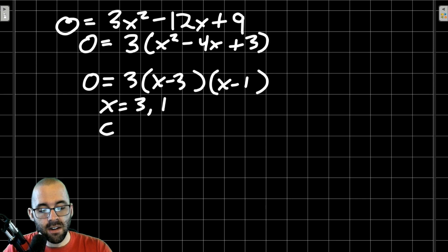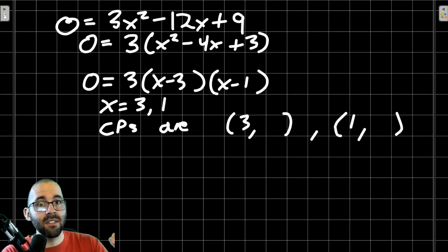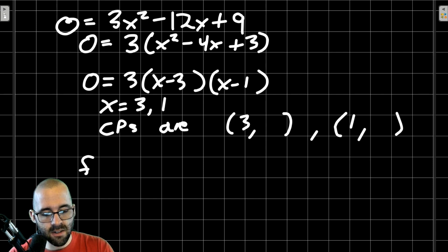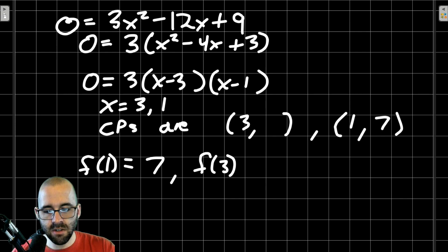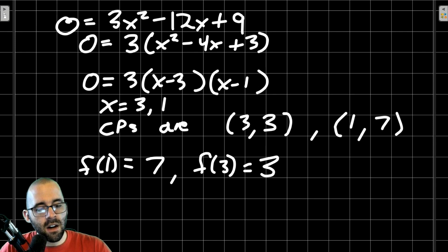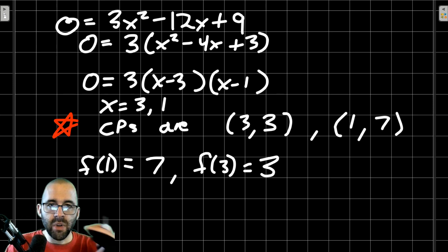Critical points are when x equals 3 and x equals 1, but remember, critical points are points. We need the y-coordinates. We plug into the original function to get those y-coordinates. Plugging in 1 into the original function gives us 7, and plugging in 3 gives us positive 3. So these are our critical points: (1,7) and (3,3). This is important.